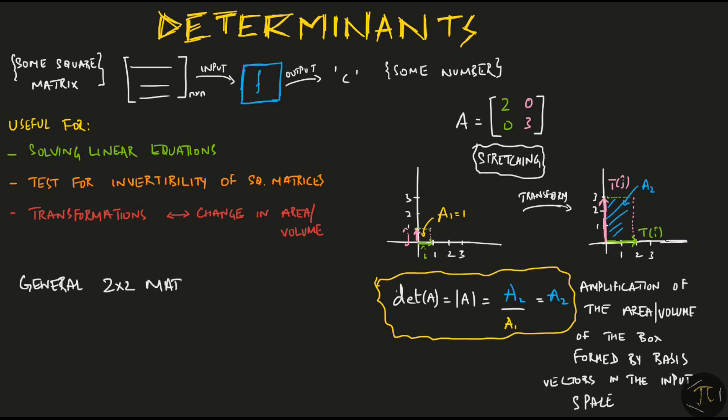So for any general 2x2 matrix, the formula for determinant turns out to be AD-BC. You can take any matrix that you want to and can verify this formula geometrically as well. For our example up here, the determinant turns out to be 2x3-0x0 which equals 6 as you could already see in the graph below.